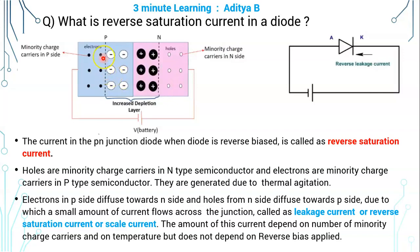These minority carriers, namely electrons in P side and holes in N side, are created or generated due to the thermal agitation.